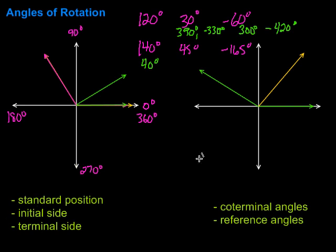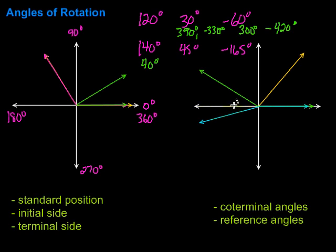For negative 165 degrees, my initial side is right here, and rotating negatively: negative 90, negative 180 — negative 165 takes me back just a little bit, somewhere about in this neighborhood. The positive acute angle formed with the x-axis is this small angle right here. That's my reference angle. Negative 165 means this angle is 165 degrees, which is 15 away from 180. So my reference angle, in this case, is just 15 degrees.